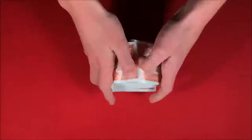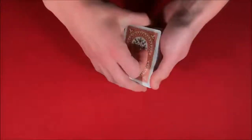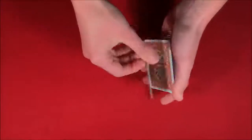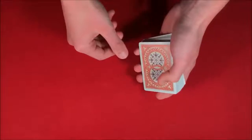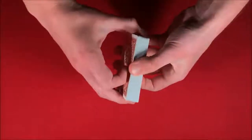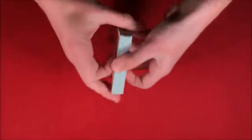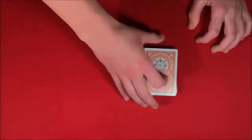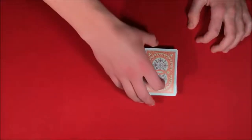You have the spectator shuffle the deck, then take the top card—in this case the five of clubs. You tell them you're going to take the five and put it into the middle, showing them you don't really know exactly where it is. At this point, tell them to go ahead and cut.